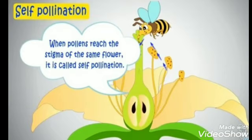For example, groundnut, bee plant, etc. Self-pollination can occur without a pollinating agent also, because the pollen grains keep falling out and fall on the stigma of the same flower.